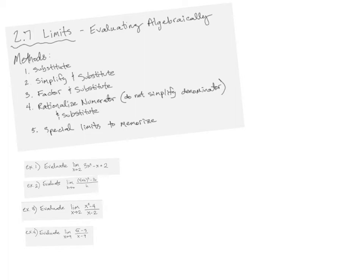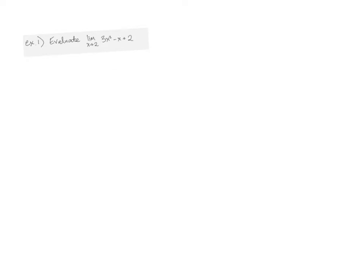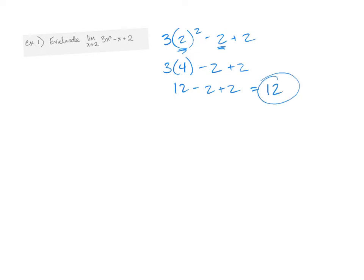Alright, the first one looks like this. The first thing you always want to do is try to substitute. I've got three, I'm going to try to substitute. I substituted to see if it works — let's see if I can just evaluate this limit. When I do that, I get three times four minus two plus two. That's 12 minus two plus two, which equals 12. So this limit is equal to 12 — all we had to do was substitute.